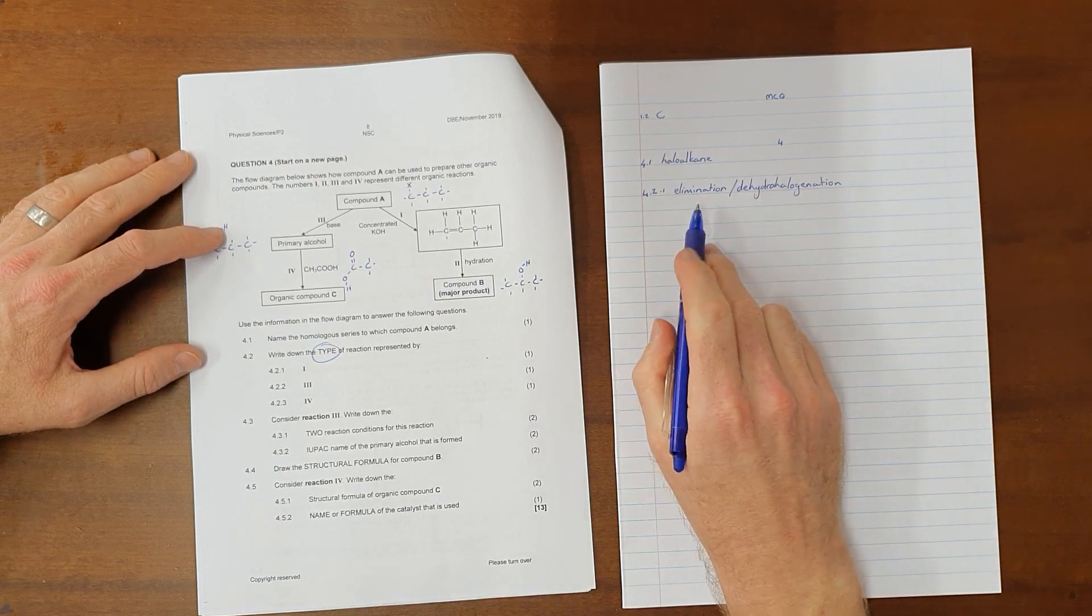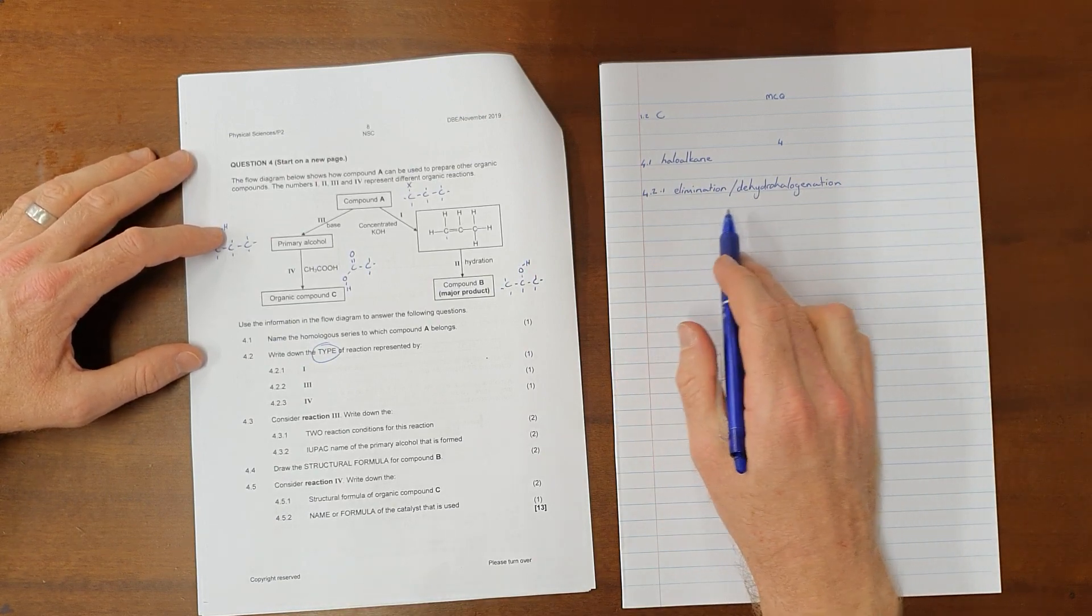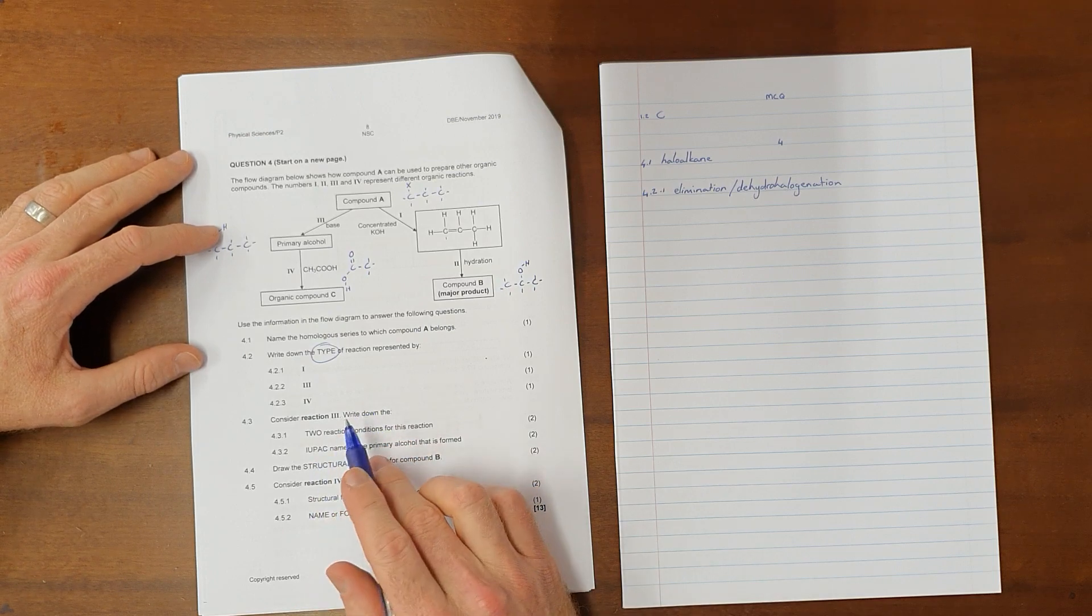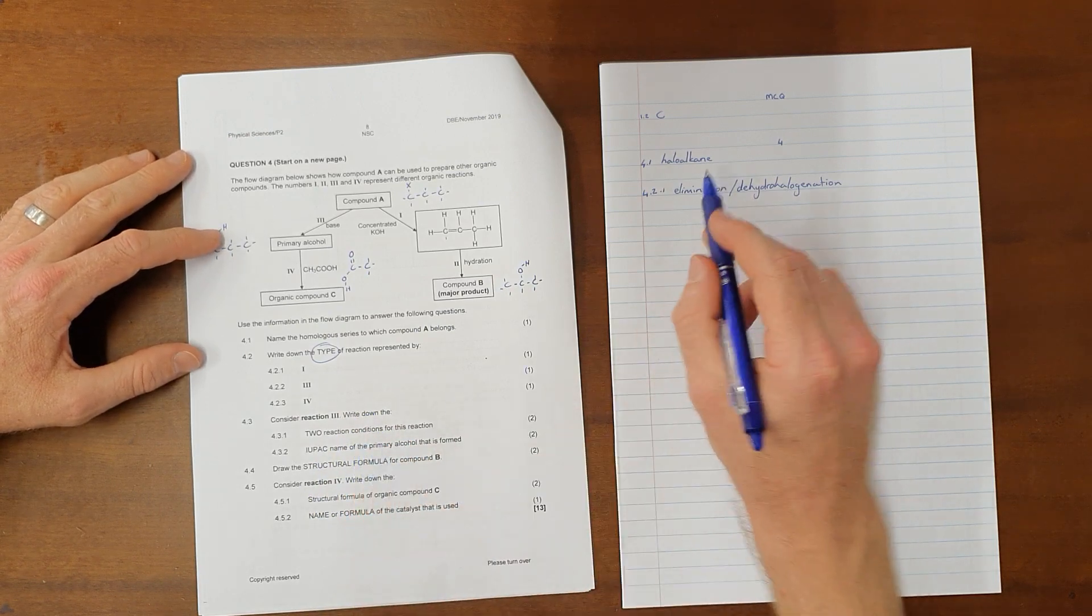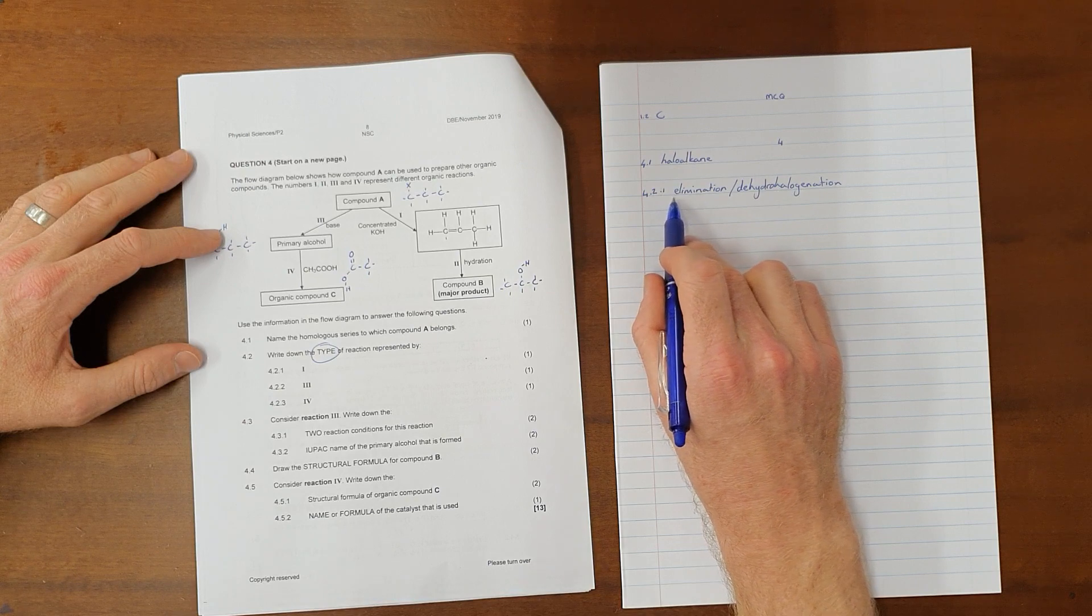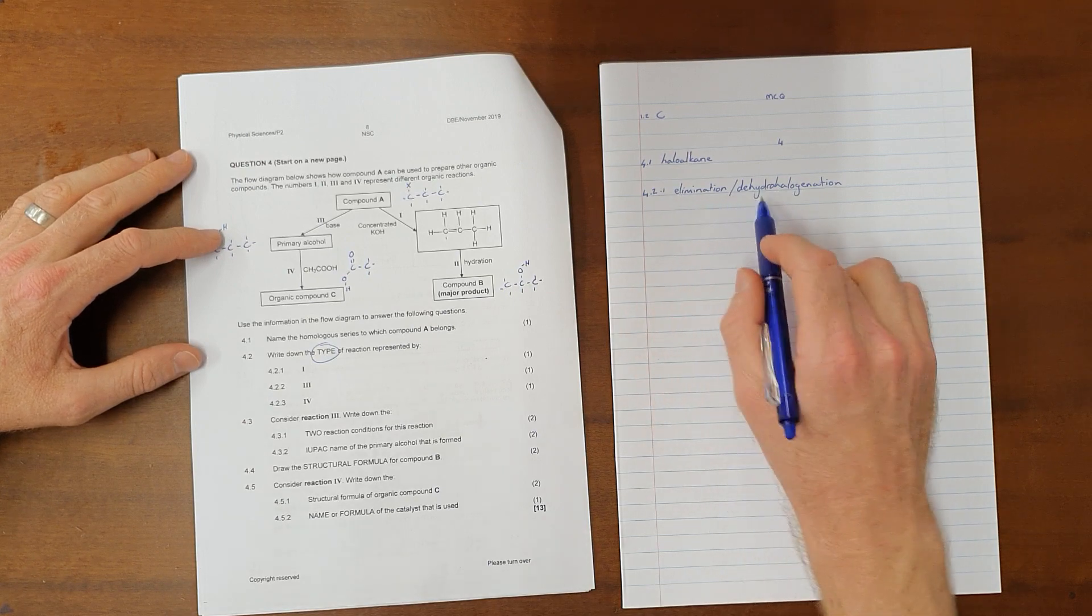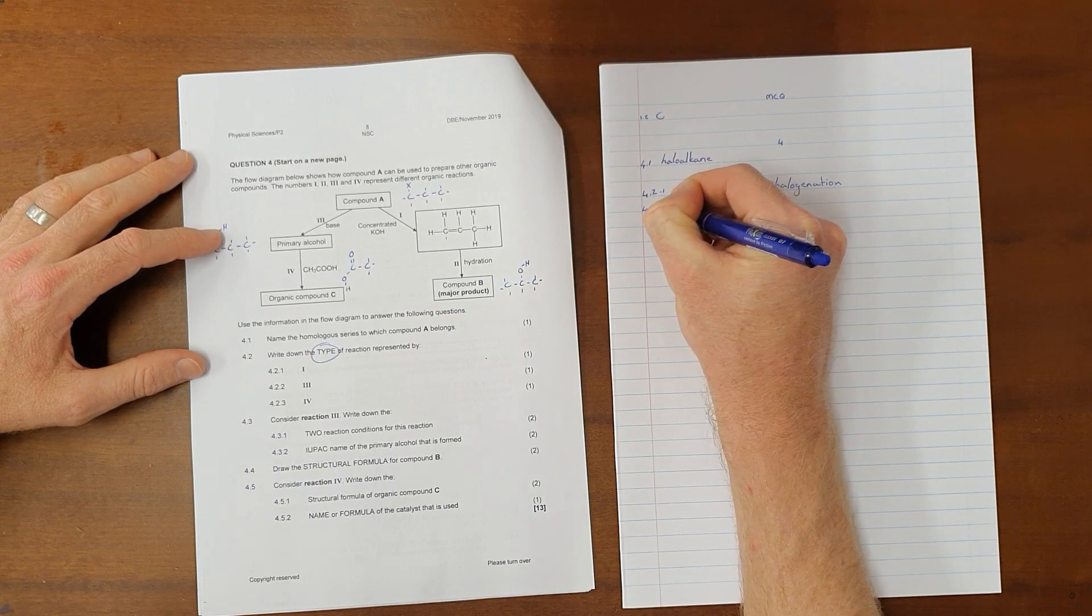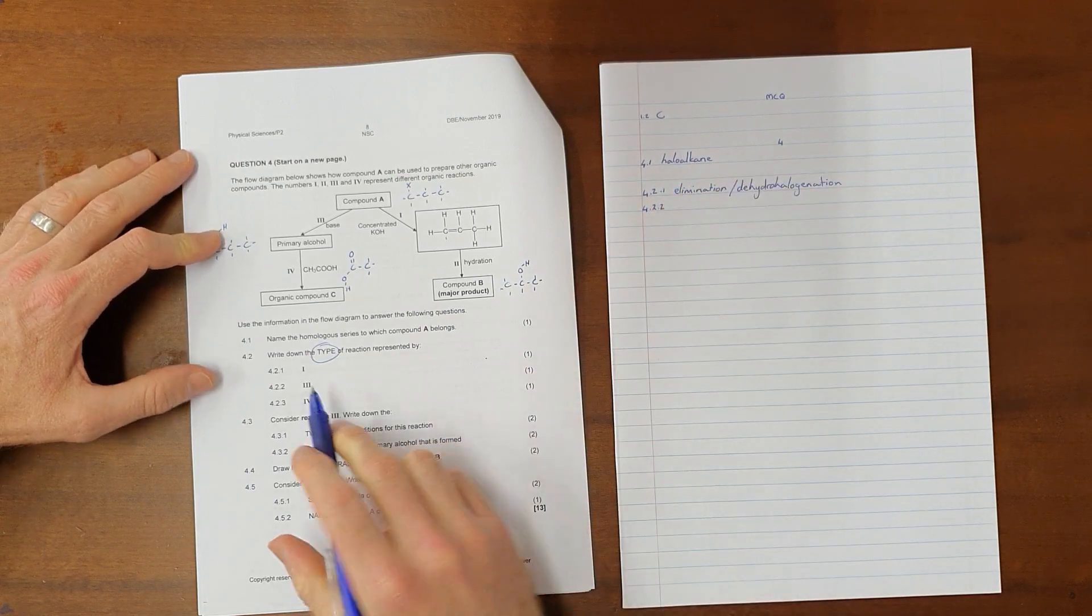So once again, type normally refers to addition, elimination or substitution. But because we cannot be sure, and when you look at the memo, you will see that both of these are given as options. We often would then say it is an elimination reaction, specifically a dehydrohalogenation reaction.